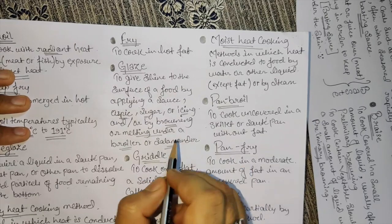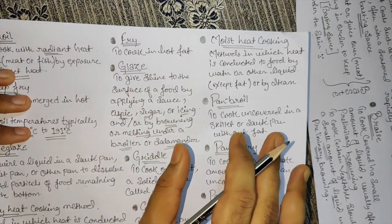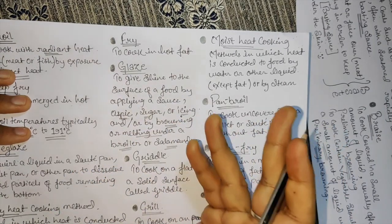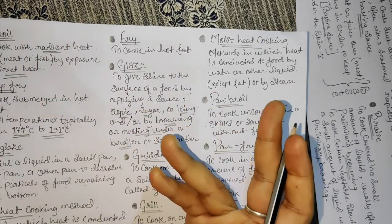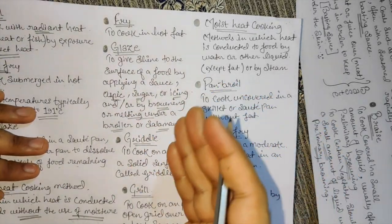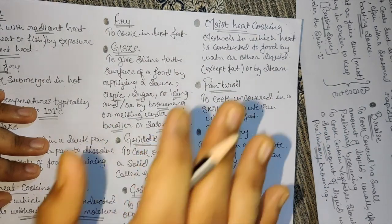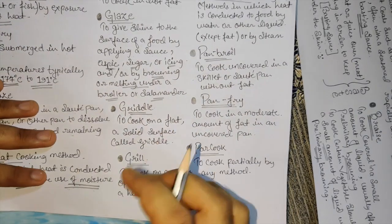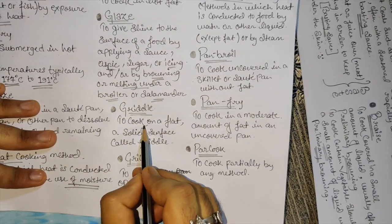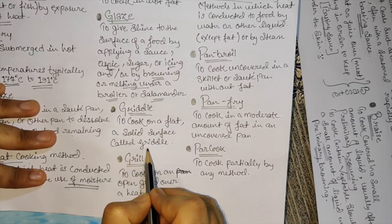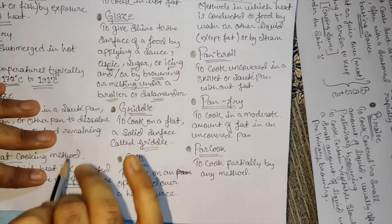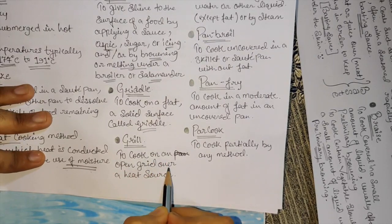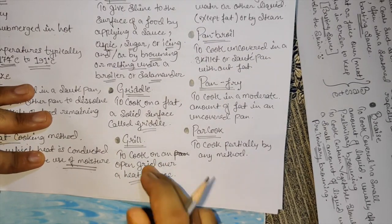Salamander is a kind of oven with rods inside that helps with browning or melting cheese for casseroles, and to maintain temperature. Griddle - to cook on a flat or solid surface called griddle or flat top. Grill - to cook on an open grill oven, a heat source.